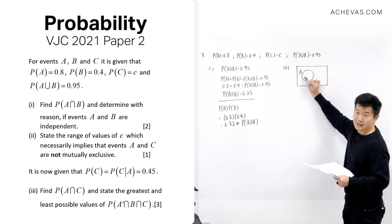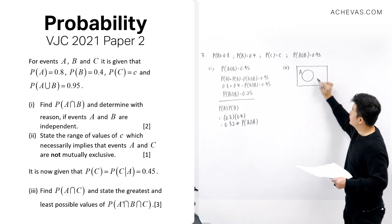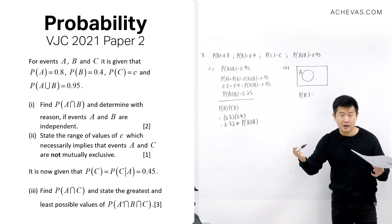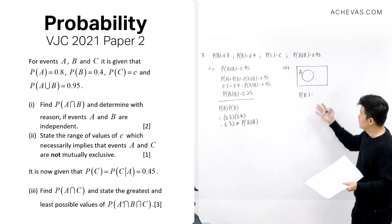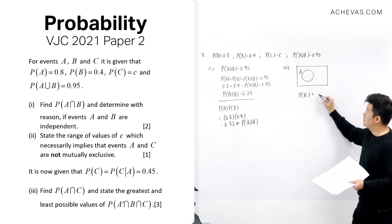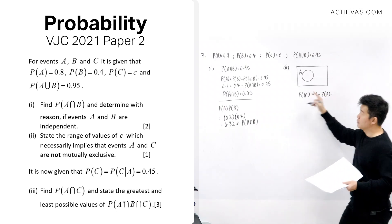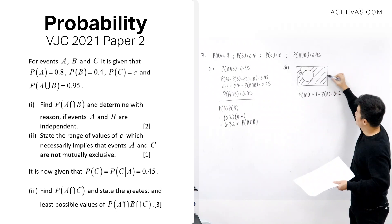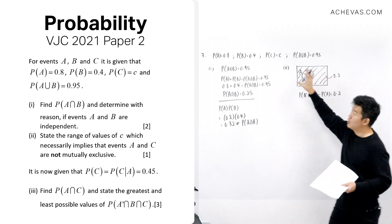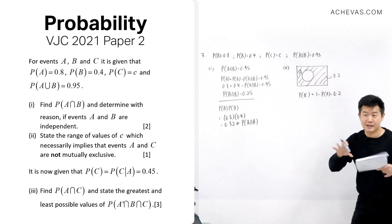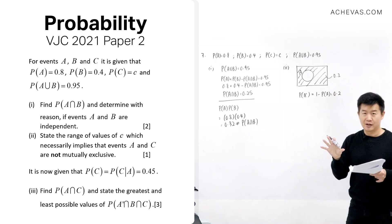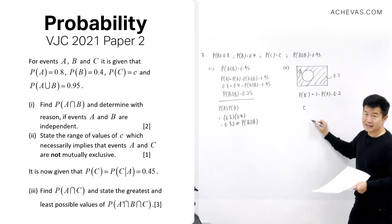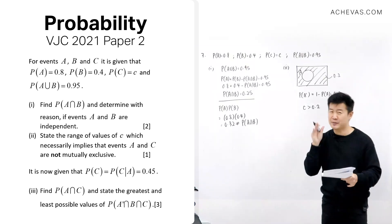The space outside A is 1 minus P(A) equals 1 minus 0.8, which is 0.2. If the entire C can fit in this space outside A, then A and C could be non-overlapping. In order to prevent this — to guarantee A and C are not mutually exclusive — C must be strictly bigger than 0.2.